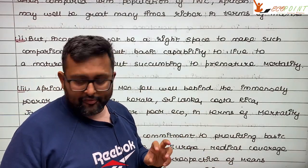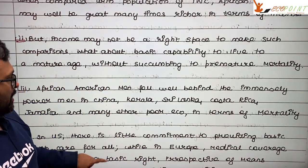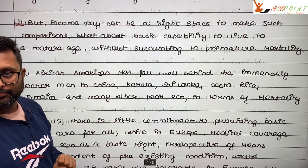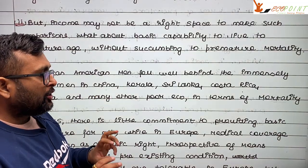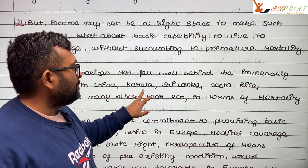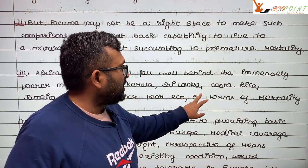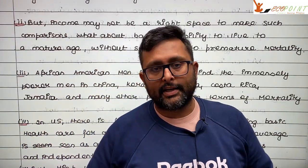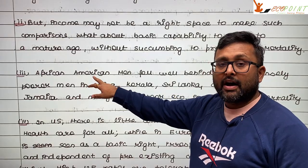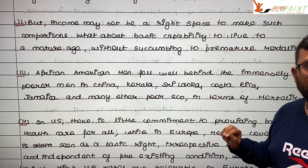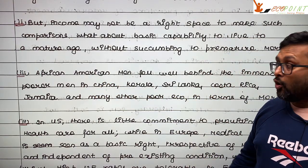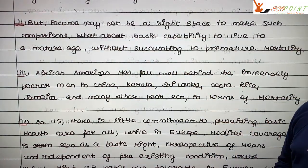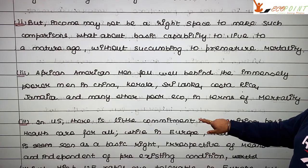For example, African-American men have higher mortality than men in China, Kerala, Sri Lanka, and Costa Rica. So although African-Americans are richer in terms of income, they are poorer in terms of mortality.